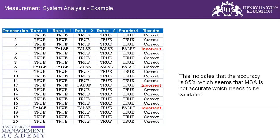To calculate MSA, we look at how many times all readings — from Rohit, Rahul, and the standard — match across the 20 transactions. Out of 20, there are three transactions not matching: you can see the 12th and 17th entries are incorrect. So 17 out of 20 are good, which means the MSA is at 85%. Since this is below the 90% threshold, the measurement system is not accepted and is not good to go.